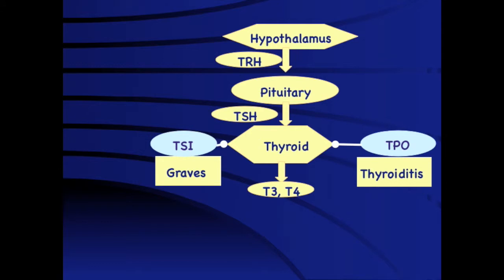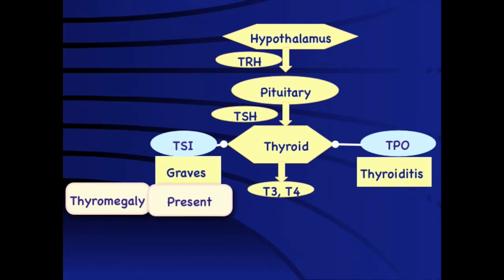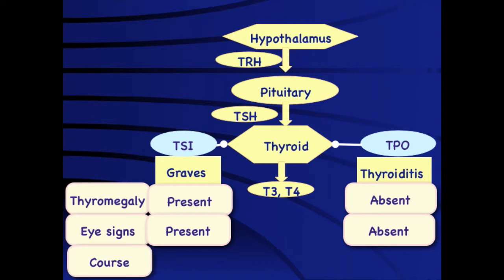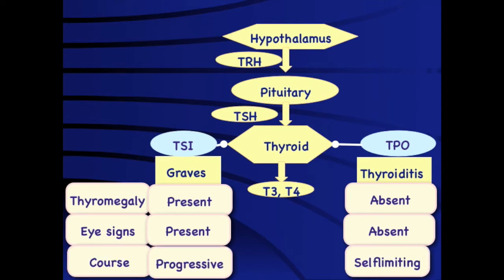The most important pointer is thyromegaly, which is often soft and smooth and present in Graves disease but usually absent in both subacute and lymphocytic thyroiditis. Eye signs are much more common in Graves disease and usually absent in thyroiditis. Graves disease follows a progressive course, while thyroiditis is usually a self-limiting condition.